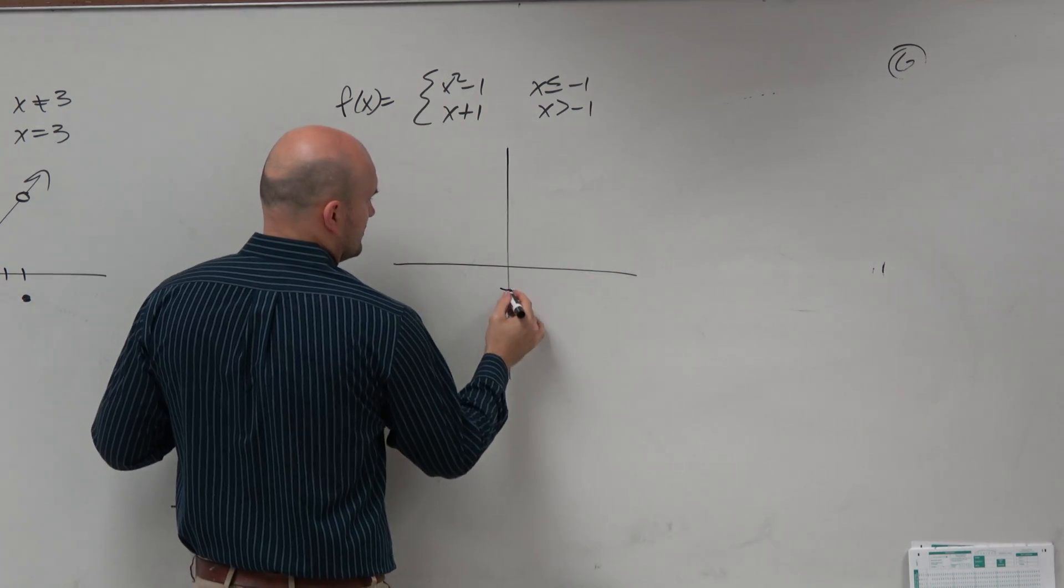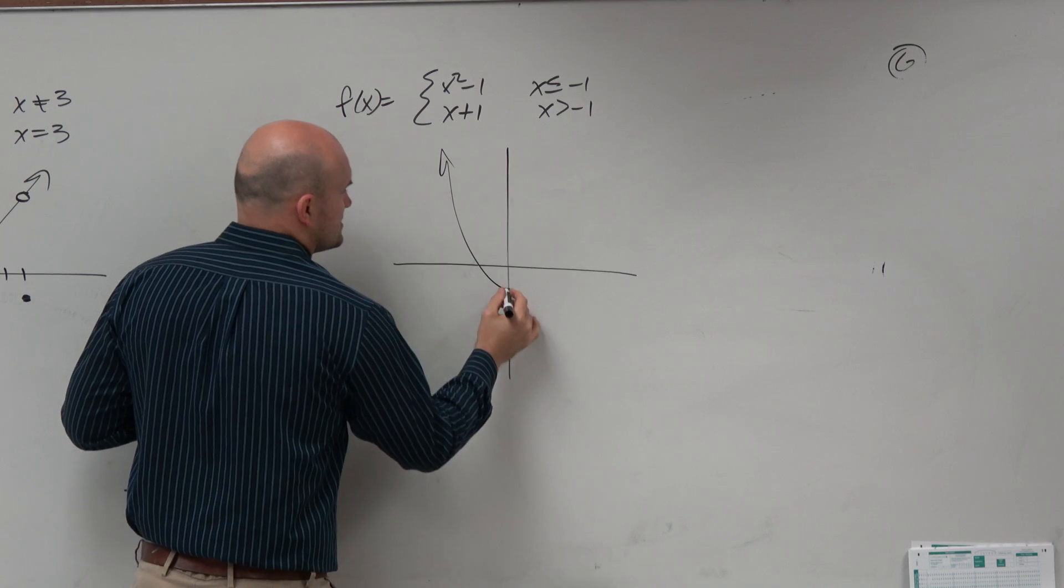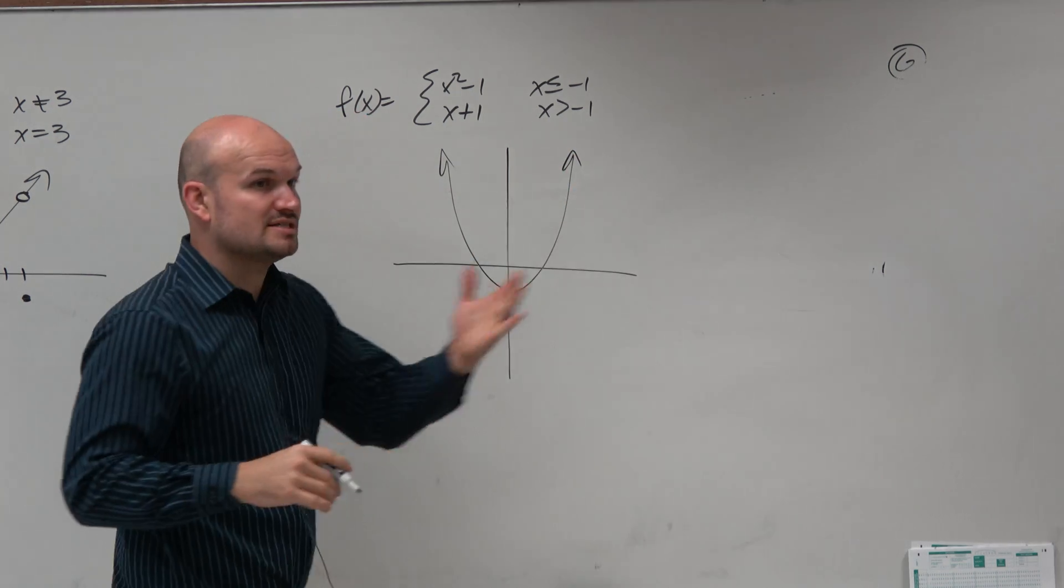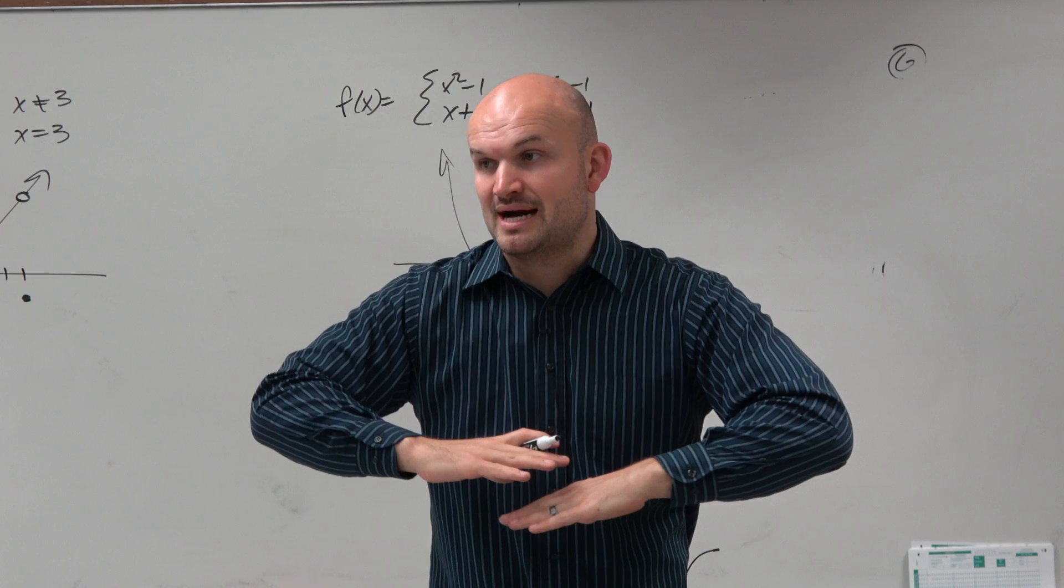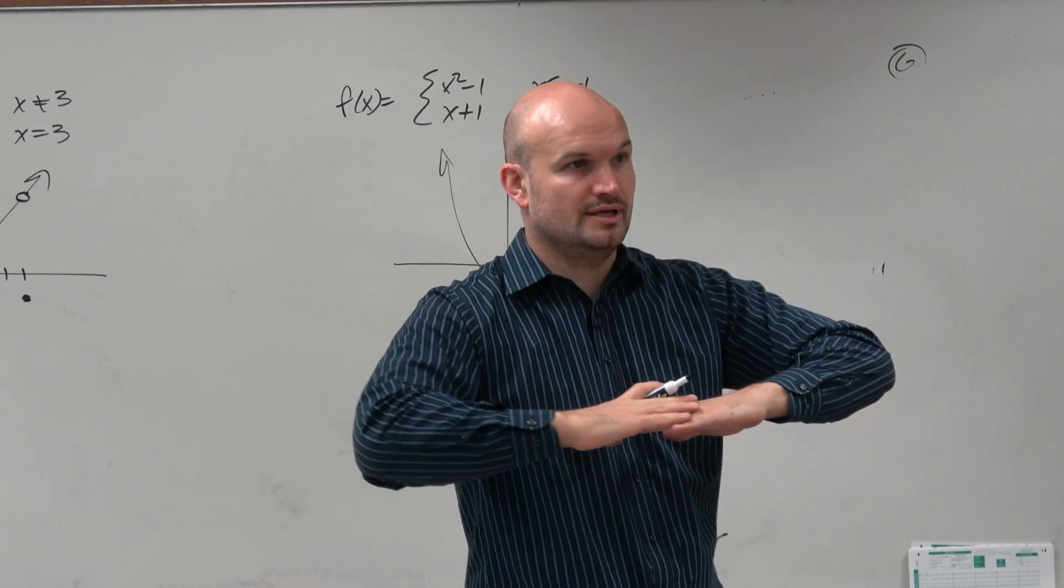So x squared minus 1 is just a quadratic that looks something like this. Remember, the minus 1 is not shifting it to the right one. It's shifting it down, because the minus is outside of the function.